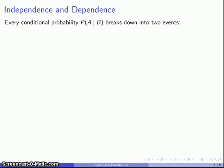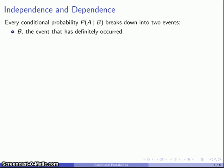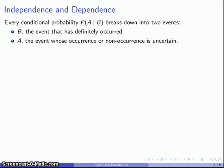This leads to the idea of independence and dependence. Every conditional probability of A given B breaks down into two distinct events. First, we have the event B — the event that we know has definitely occurred. And then we have event A, whose occurrence or non-occurrence is uncertain. From a Bayesian viewpoint, we want to express our confidence that event A will occur the next time we run a random experiment.